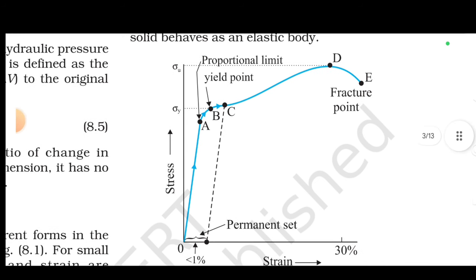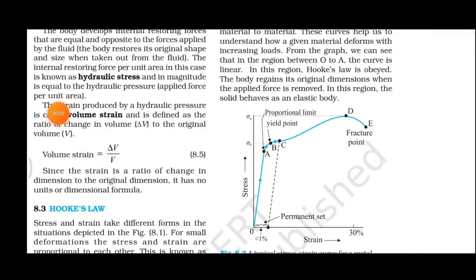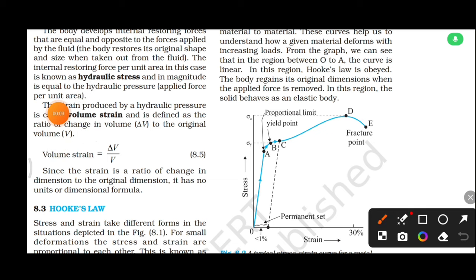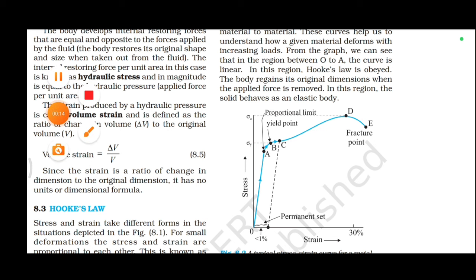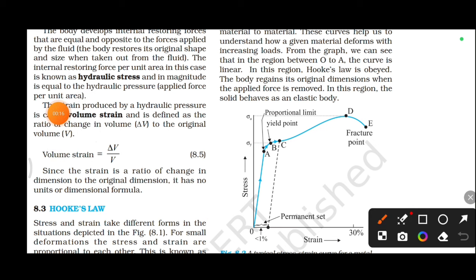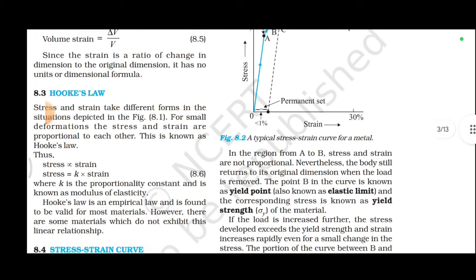On the stress-strain graph, points A, B, D, and E are labeled. Where is Hooke's law obeyed? Between O and A, in this region, Hooke's law is obeyed. An important feature: the body regains its original dimension when the applied force is removed. This applies in region OA.